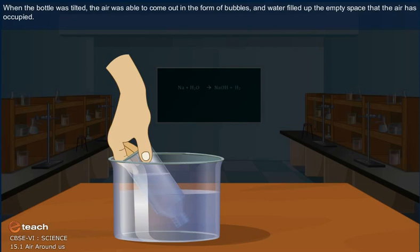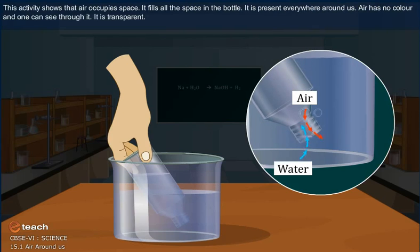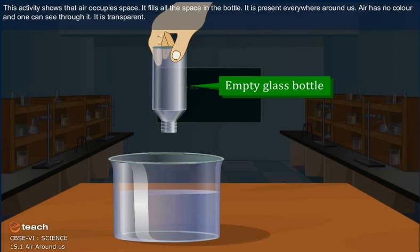Water filled up the empty space that the air has occupied. This activity shows that air occupies space. It fills all the space in the bottle. It is present everywhere around us. Air has no color and one can see through it. It is transparent.